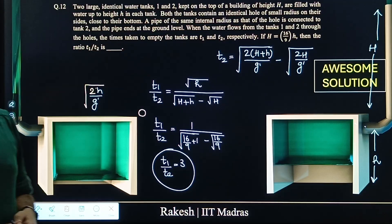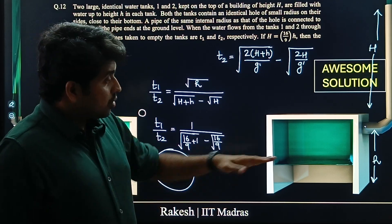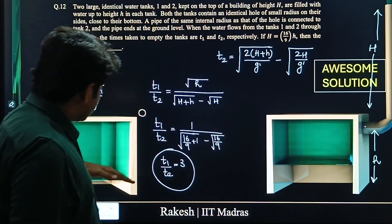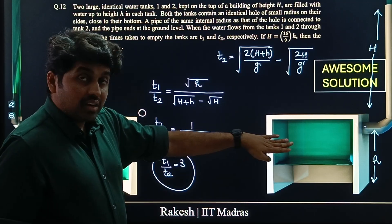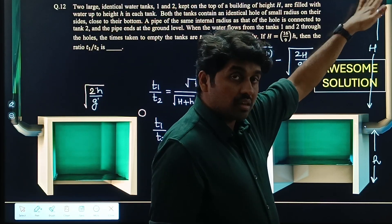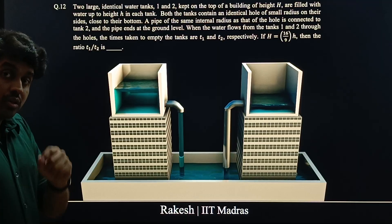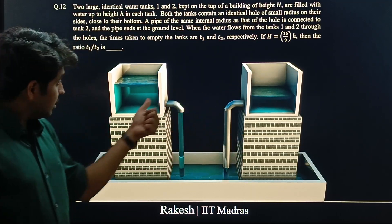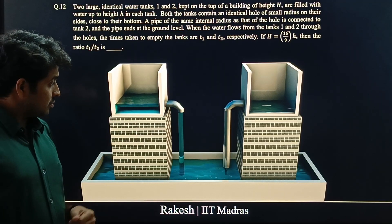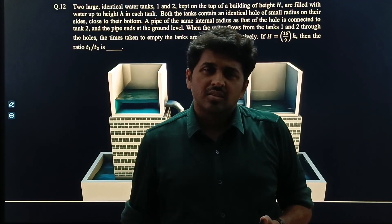To summarize the visual: you might think both tanks empty the same height of water so they'd take the same time, but the tank with the pipe drains much faster because the velocity of efflux is greater. The animation confirms that the tank with the pipe to the bottom drains much faster. I hope you liked this visual and the awesome kinematics technique — see you in the next video!